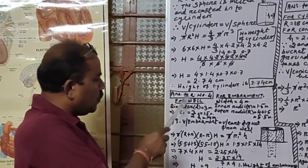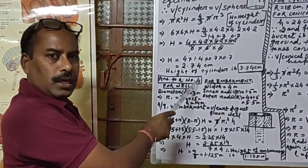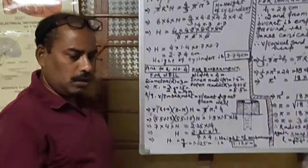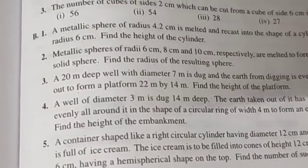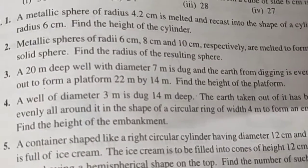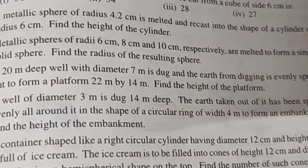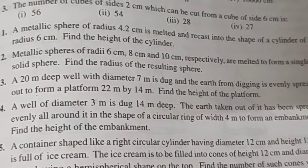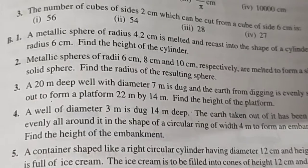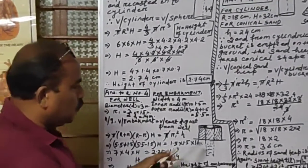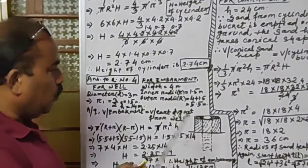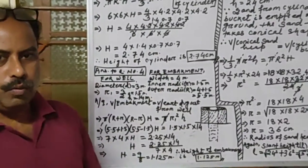Now we go to question number 4, which is a very important question. Question 4 says: a well of diameter 3 meters is dug 14 meters deep. The earth taken out has been spread evenly all around in the shape of a circular ring of width 4 meters to form an embankment. Find the height of the embankment. According to the question, we dig out a well and the earth is used to form an embankment around it.